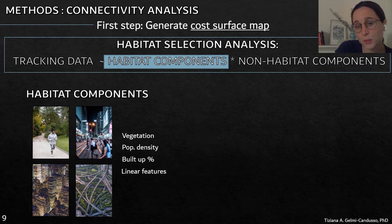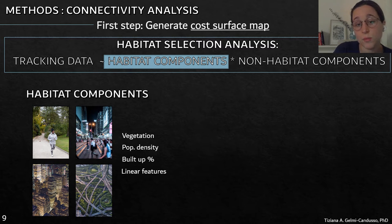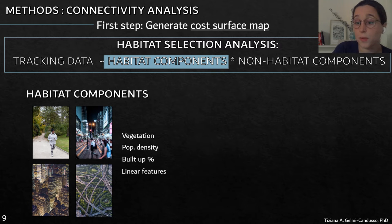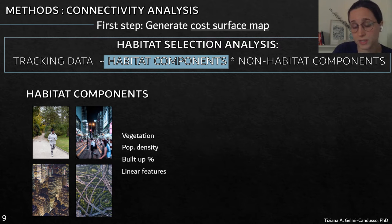For habitat components, we disaggregated urbanization into four components that might affect animal movement: vegetation, population density (the presence of people), built percentage (how many buildings are in the area, since buildings are barriers), and linear features. We categorized linear features based on traffic and human use.